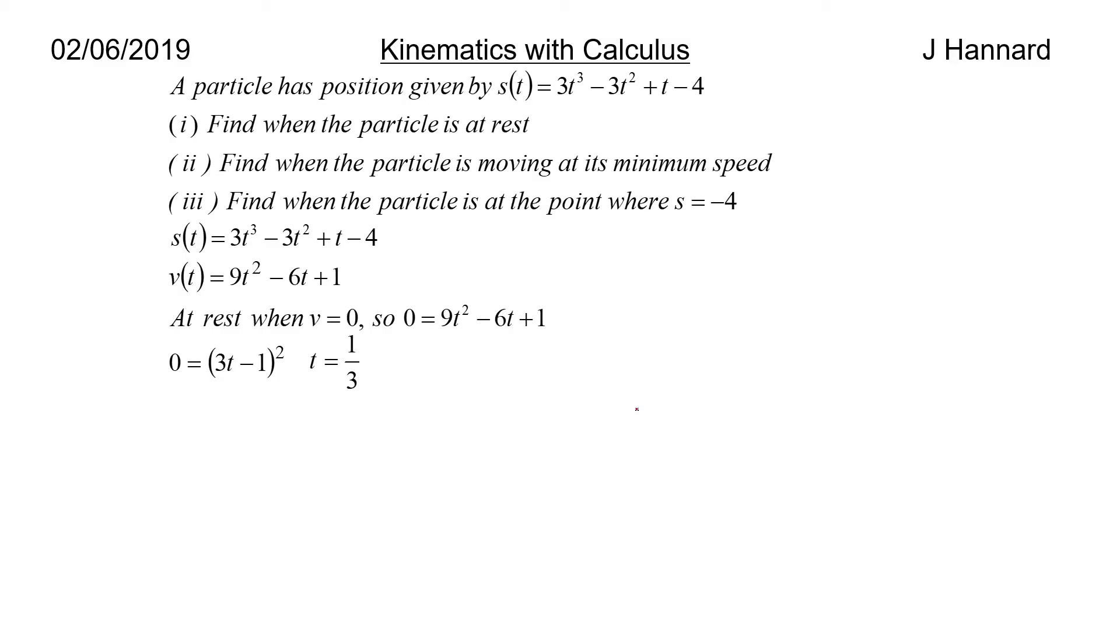Part 2. Find when the particle is moving at its minimum speed. What does minimum speed mean? Well, it means when a = 0. It means that you are not accelerating or decelerating. It's either going to be at its max speed or its min speed. So we need to find dv/dt. So we get 18t - 6. So that's our a(t). We set that equal to 0, so we get t = 1/3. So v_min is 9 times 1/9 because a third squared. So we stick our third back into the v equation above and we get v = 0 which confirms what we saw before because we found t = 1/3 for when it was at rest if you remember.